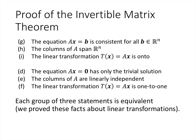We also proved that D, E, and F are all equivalent — three different ways to talk about what it means for a linear transformation to be one-to-one. Statement D says Ax equals 0 has only the trivial solution, E says the columns of A are linearly independent, and F says the linear transformation is one-to-one. So we can add E and F to our list. Looking through the letters, the only one missing now is L, the 12th statement.